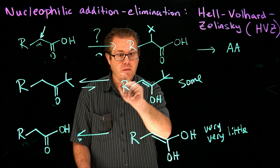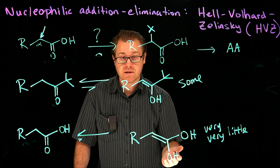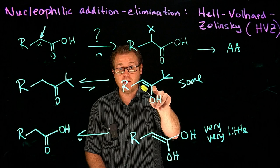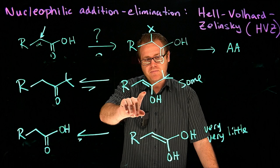Hence, the halogenation reaction works under both basic and acidic conditions for ketones because the enolate or enol can form. But for carboxylic acids, the enol is essentially not available in sufficient amounts.